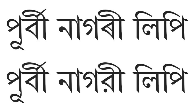Sankardev used the script in the 15th and 16th centuries to compose his oeuvre in Assamese and Brajavali, the language of the Bhakti poets. Before him, Madhava Kandali used it to write the Assamese Ramayana in the 14th century. It was also used by the later Ahom kings to write the Buranjis, the Ahom chronicles, in the Assamese language. There is a rich legacy of East subcontinental literature written in this script, which is still occasionally used to write Sanskrit today.